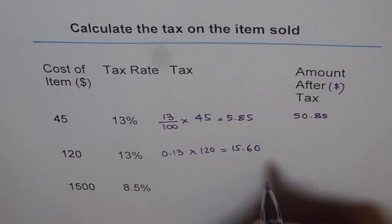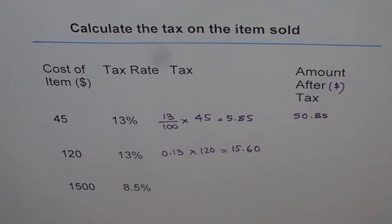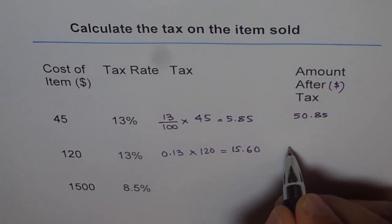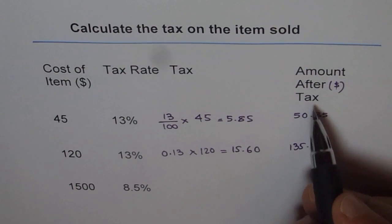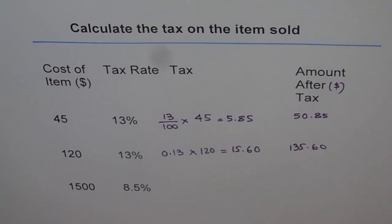15.60, because you are paying dollars and cents. So that is 15.60 is the tax on an item which costed 120 dollars. So the total amount will be 120 plus 15.60. So we'll add 120 to this. It comes to 135.60. So we'll write it here, 135.60 as the amount after tax. I hope you understand.